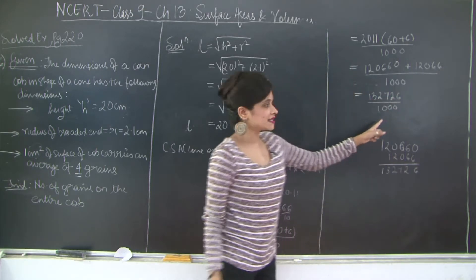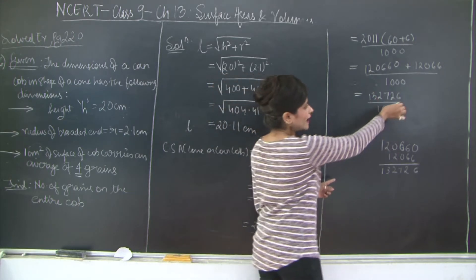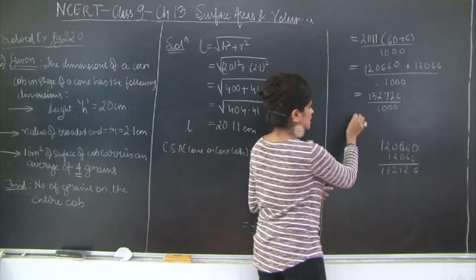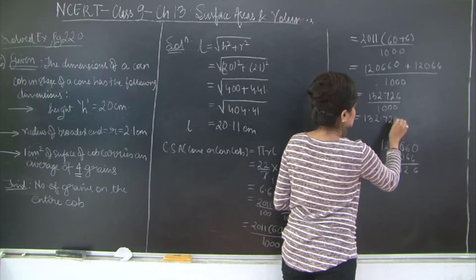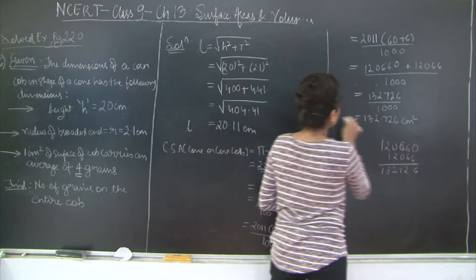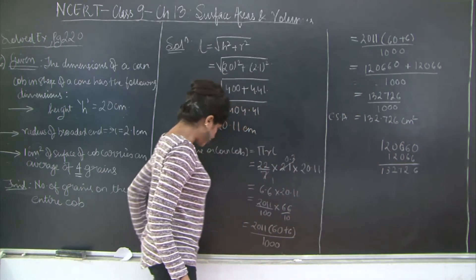So 132,726 upon 1000. To get rid of these 3 zeros in the denominator, we are going to go back to the left by 3 decimal places. This will give us 132.726 cm². This is the curved surface area.